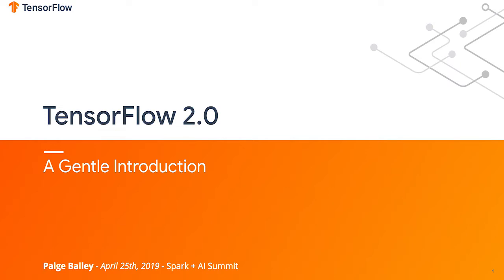How many folks here have used Google Colab before? Not as many hands as I was expecting, which is great — I'm giving you a present today. Google Colab is a Jupyter Notebook-like environment that runs completely in the browser. It gives you the ability to use CPUs, but also GPUs and TPUs for free. All you have to do is open up a notebook environment using Colab and you're off to the races. TPUs are specialized hardware for deep learning — the same hardware we use at Google.